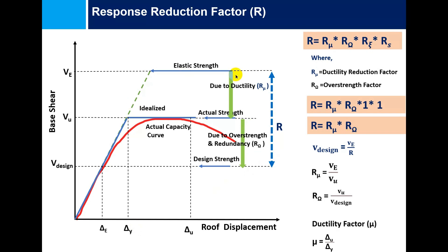In general, ductility is the ability of a material, cross-section, member, or overall structure to sustain large deformations without fracture or failure, or to dissipate large amounts of hysteretic energy without any collapse of the structure. It enables the structure to undergo large deformations, resulting in dissipation of large amounts of energy before collapse occurs. The ductility reduction factor is the measurement of the non-linear global response of the structure.